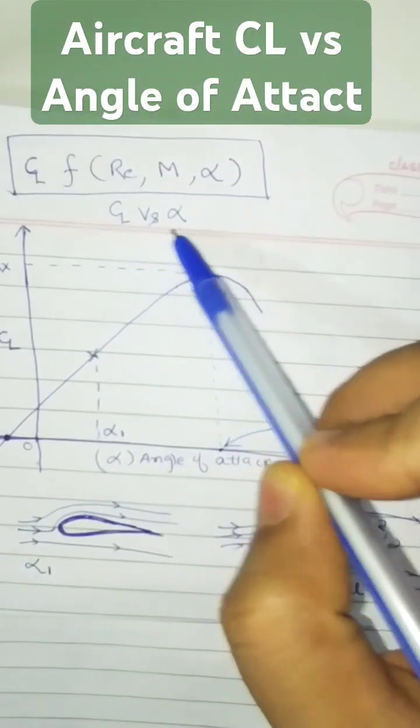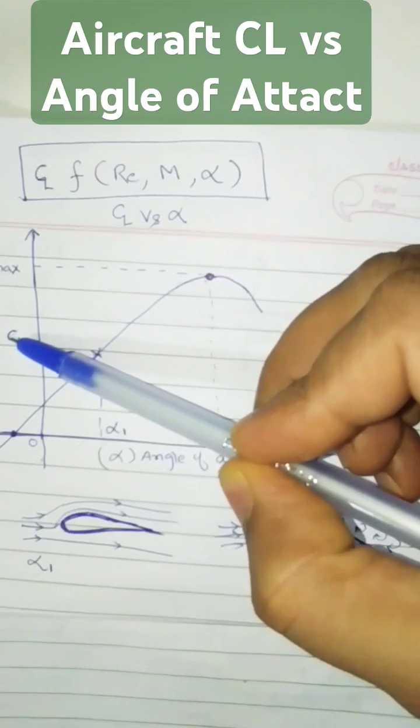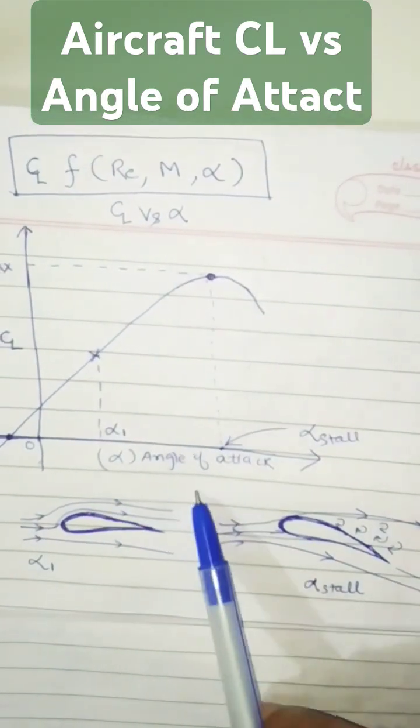In this video, we will talk about the CL versus alpha curve. So at the y-axis, this is the coefficient of lift and the x-axis, angle of attack.